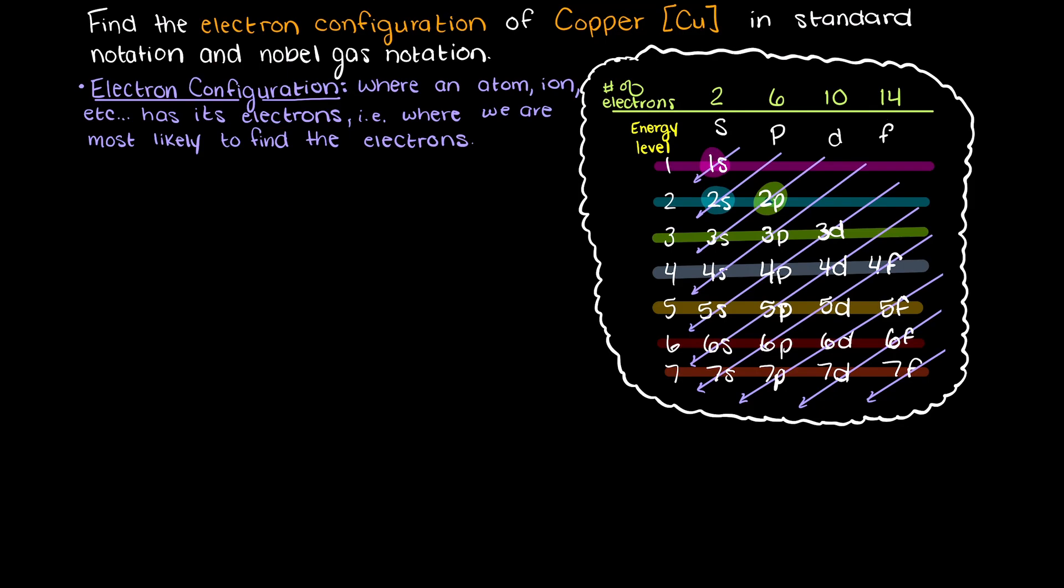When finding the electron configuration of an atom, we are being asked where does that atom place its electrons, in other words which shells and orbitals are its electrons most likely to be found in. To solve this, the first thing we need to do is look at our periodic table and see how many electrons our copper atom actually has.